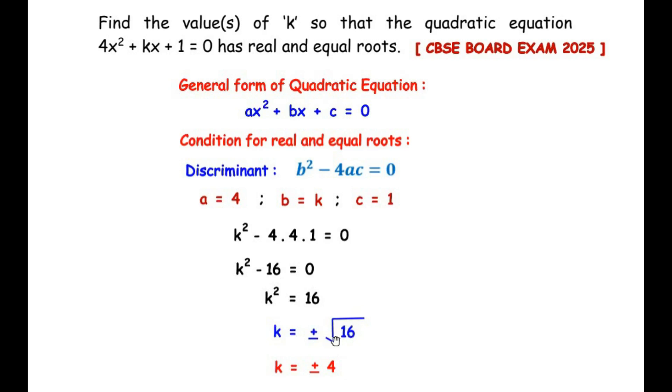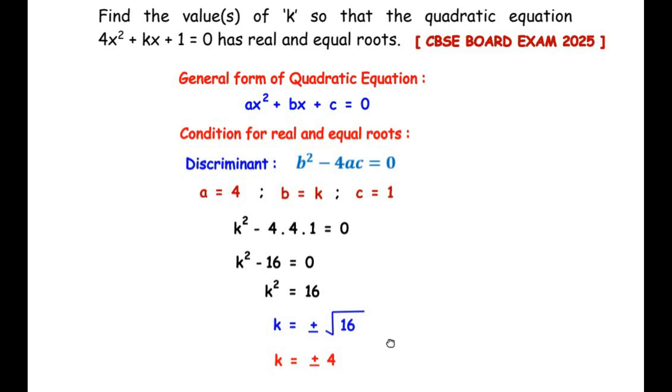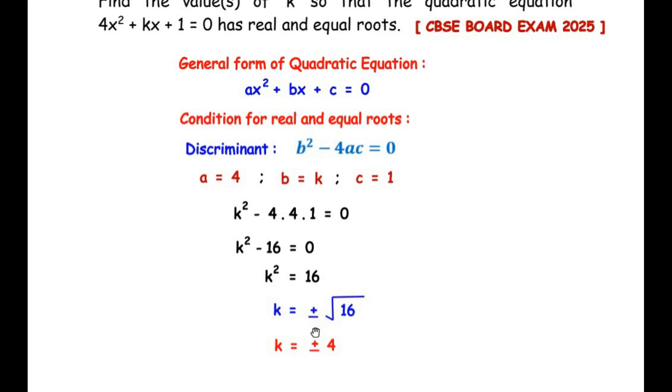The value of k we get here is plus or minus 4. So we have got two values of k here: positive 4 or negative 4. This is our answer.